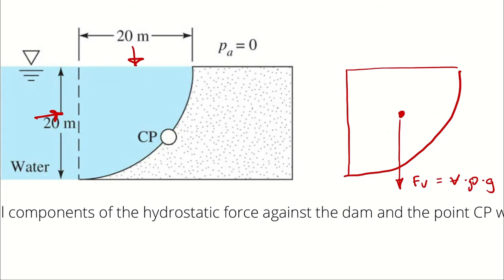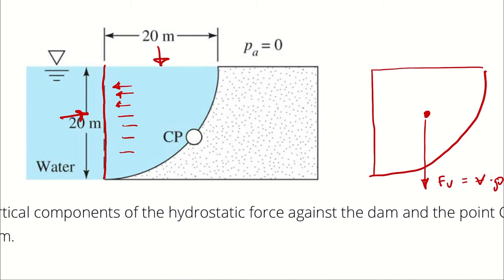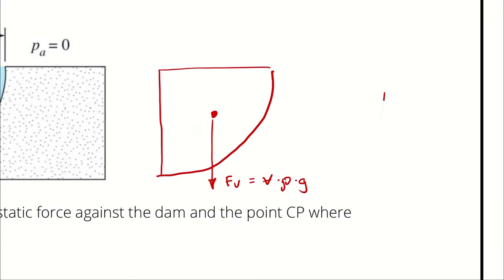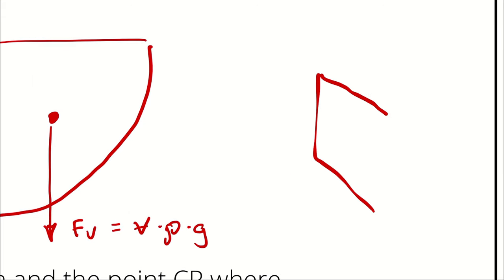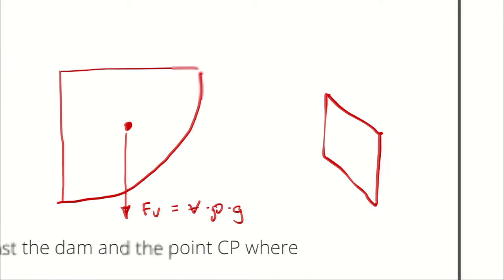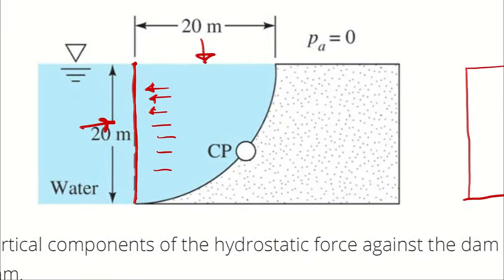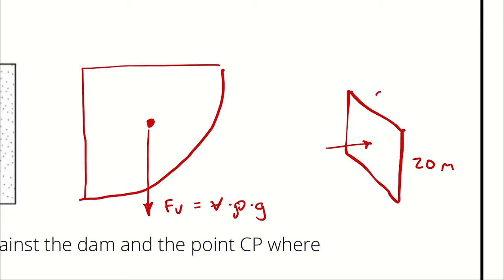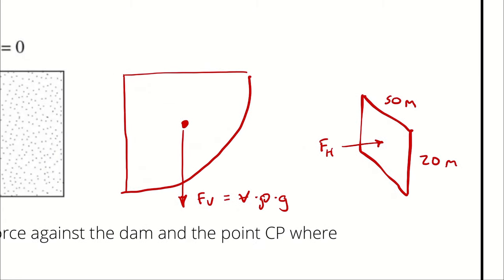For the horizontal component, we just project the dam over to a vertical line and consider what the water sees. We treat this as just a rectangle — that rectangle has a height of 20 meters and a width of 50 meters. We can use the same approach we have been using: figure out YCP, figure out the center of gravity, subtract the two to represent how far it is from the surface, etc.